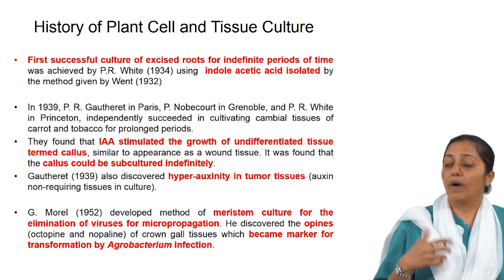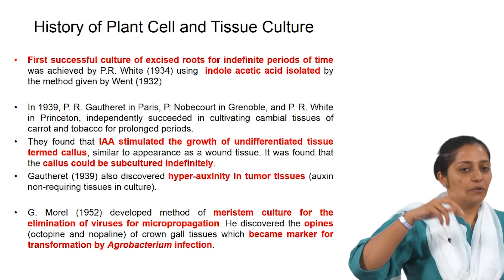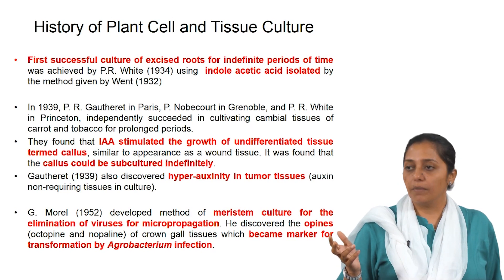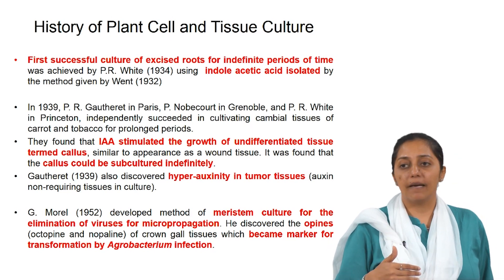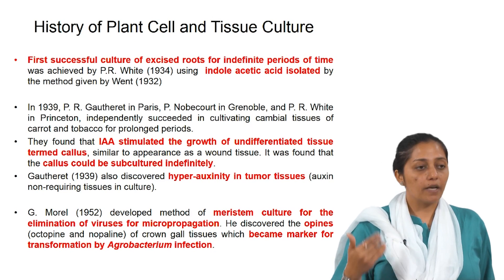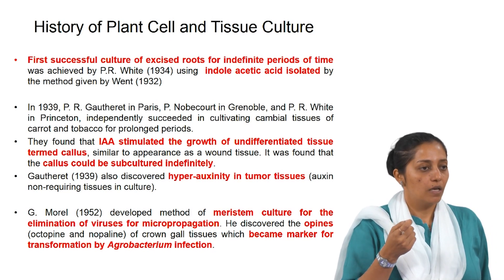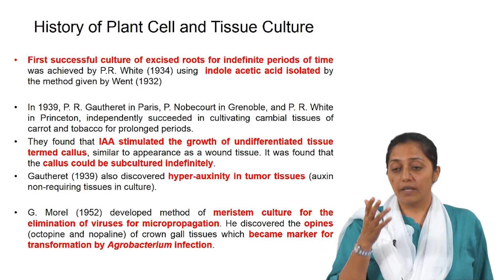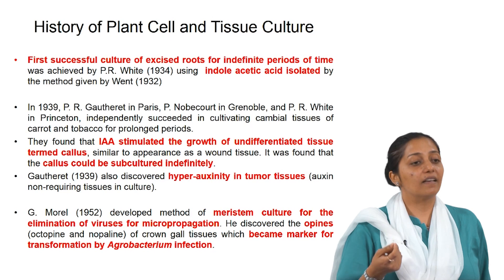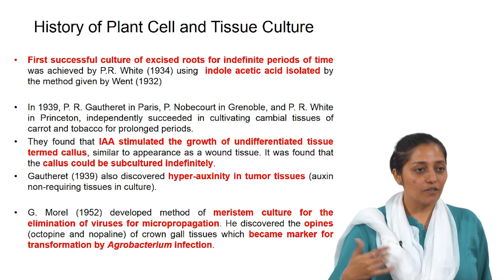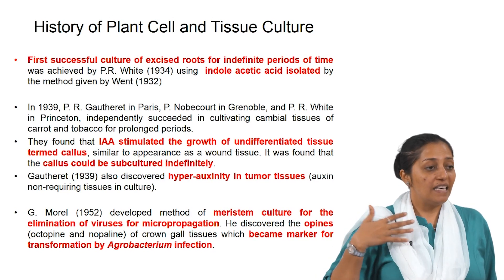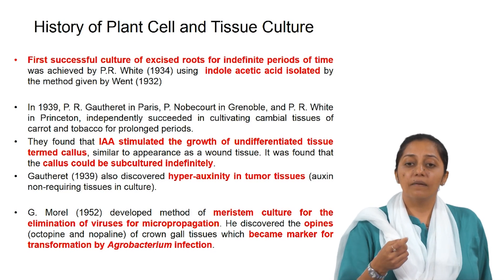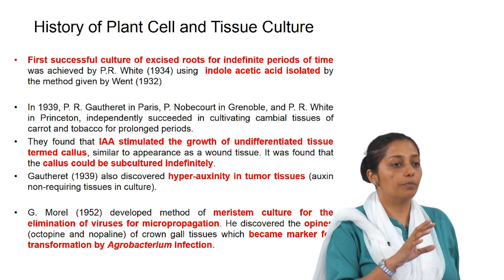Then meristem culture came into the picture. People were looking at it depending on the objective — and the objective was to see if virus-free plants could be obtained. For virus-free plants, people came up with the idea of meristem culture. These meristematic tissues, when used for plant regeneration, are found to be free of viruses. It is an interesting question why a meristematic region would be free of virus while other matured parts of the plant are easily invaded. Meristem culture came into the picture for plant regeneration to produce virus-free plants.